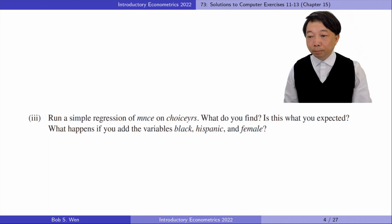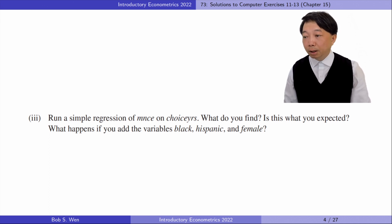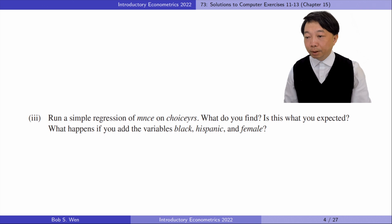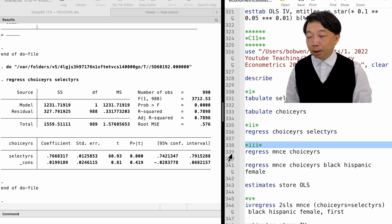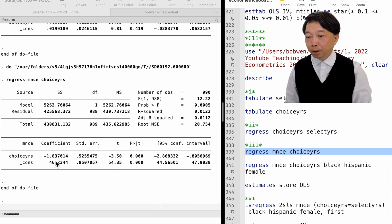In part three, we run a simple regression of the student's percentile score on the years of attending choice schools. The simple regression gives a significant and negative slope estimate. The negative effect of school choice on scores is not expected.